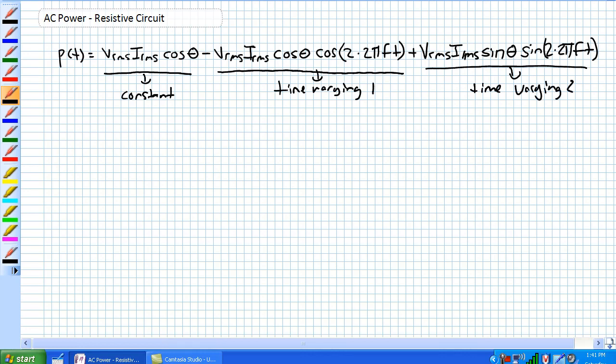We're going to use this formula using a purely resistive circuit. Let's draw our purely resistive circuit where here's our resistor with V(t) of that polarity and current I(t) going in that direction.